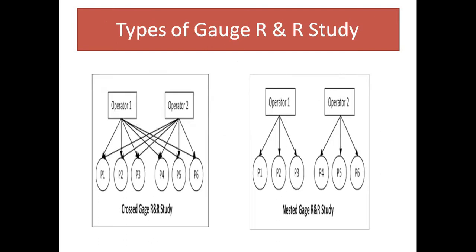There are basically three types of Gauge R&R study. First is Crossed Gauge R&R study, second is Nested Gauge R&R study, and third is Expanded Gauge R&R study, which is not listed here. So first, let's discuss Crossed Gauge R&R study.